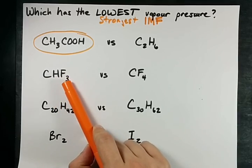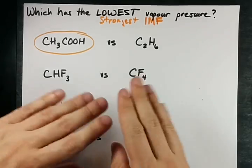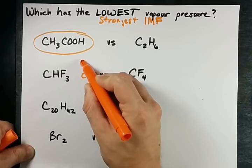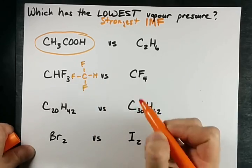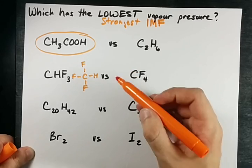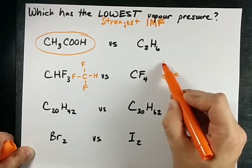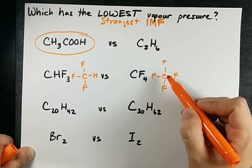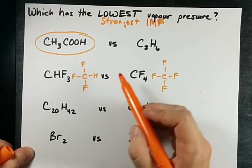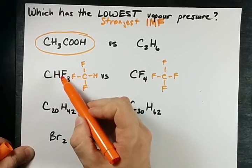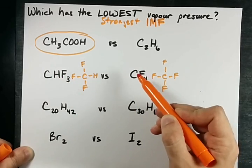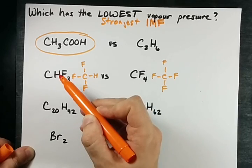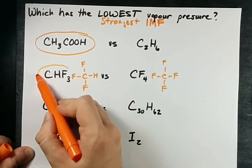How about this one? CHF₃ versus CF₄. I don't want you getting all excited and saying that there's hydrogen bonding here. If you're careful about the Lewis structure, this is a carbon with three fluorines and one hydrogen — the H and the F are not connected to each other. What is significant is that a CF₄ molecule is a symmetrical tetrahedron. It has fluorines pulling equally in all directions, which means CHF₃ is polar and CF₄ is not. The polar molecule has dipole-dipole forces and the non-polar molecule only has London dispersion forces. Dipole-dipole forces are stronger, which means CHF₃ has the lower vapor pressure.